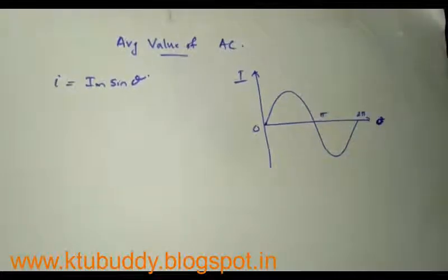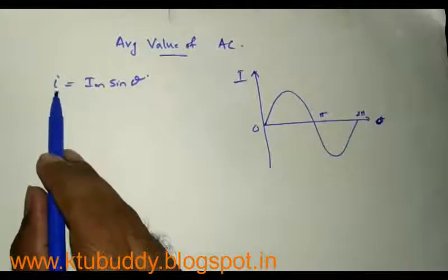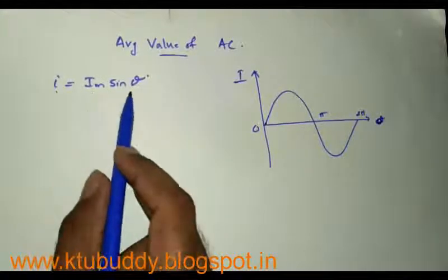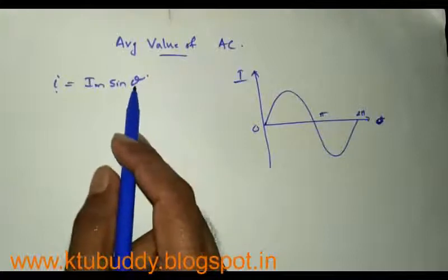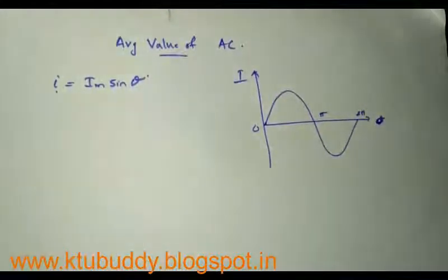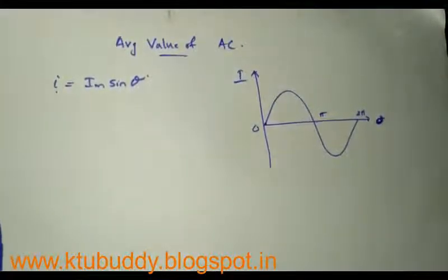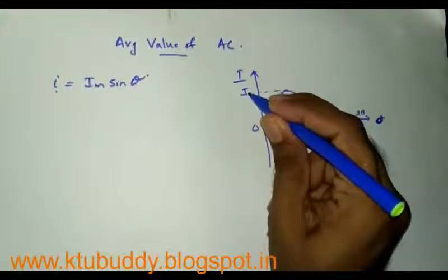Let's derive an expression for the average value of alternating current — that is, the sinusoidal alternating current. I have a sinusoidal alternating current represented by instantaneous value I equal to maximum value Iₘ into sine theta, where theta represents the angular position across the wave. I am going to derive an expression for the average value of this alternating current, where Iₘ is the maximum value.